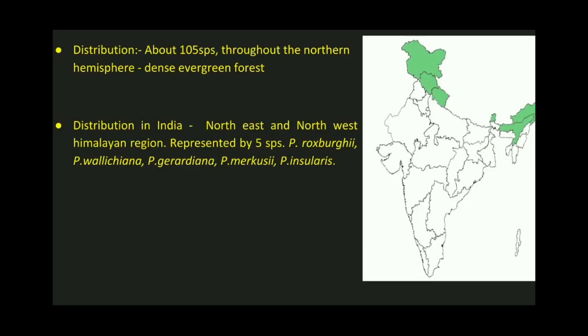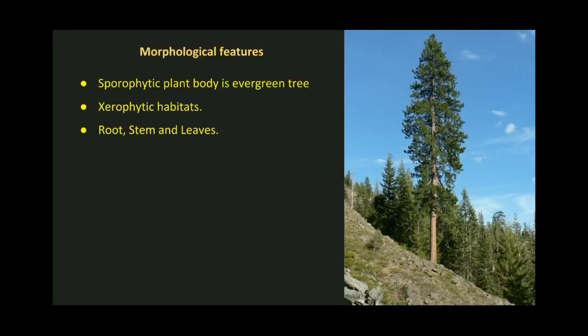The different species found in India are Pinus roxburghii, Pinus wallichiana, Pinus gerardiana, Pinus merkusii, and Pinus insularis. Moving on to the morphological features or external characters, the plant body is represented by a sporophytic plant body. These are evergreen tall trees and the plants are adapted for xerophytic habitats.